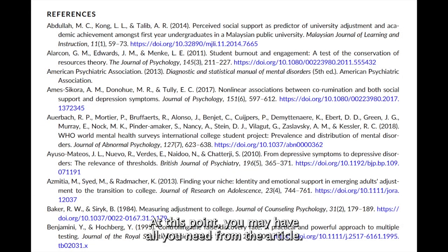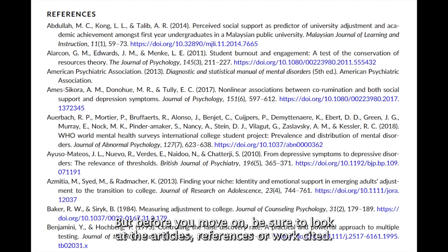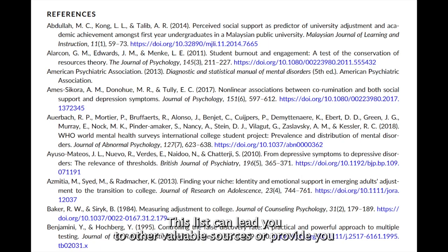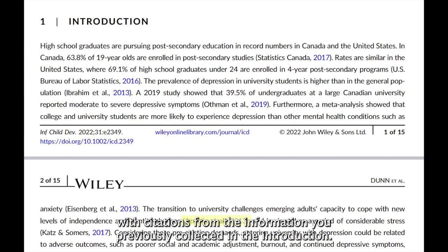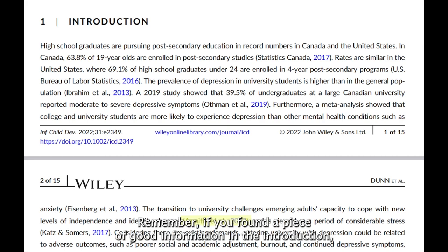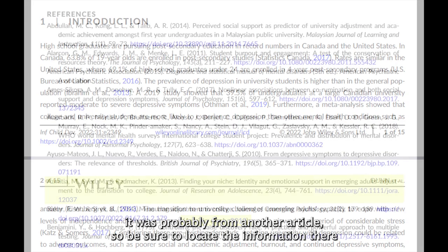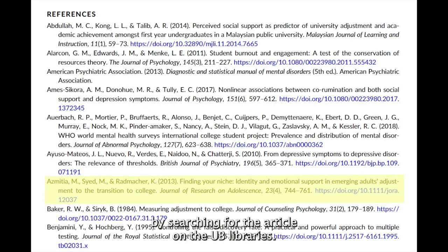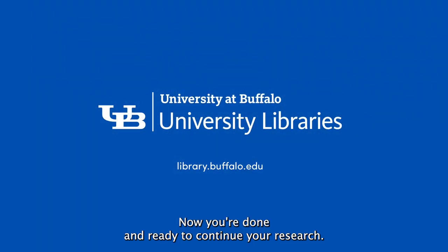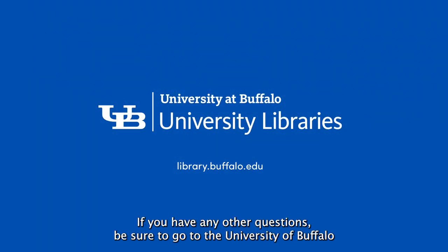At this point, you may have all you need from the article. But before you move on, be sure to look at the article's references or works cited. This list can lead you to other valuable sources or provide you with citations from the information you previously collected in the introduction. Remember, if you found a piece of good information in the introduction, it was probably from another article, so be sure to locate that information by searching for the article on the UB Libraries. Now you're done and ready to continue your research.